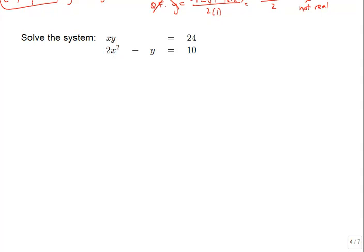The next system is xy equals 24 and 2x squared minus y equals 10. The bottom equation is a parabola and the top is a rational function resembling a hyperbola. We'll try to find an algebraic technique that gives a more accurate solution than graphing by hand, since these curves are not easy to draw.